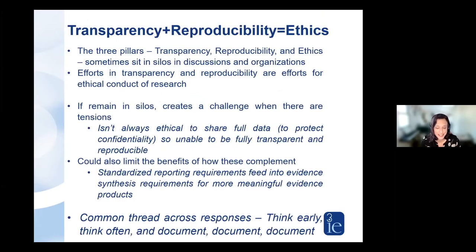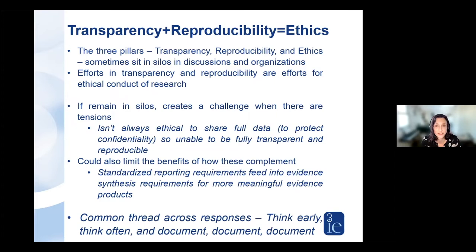Why this intersecting lens? We have three pillars — transparency, reproducibility, and ethics — and sometimes these sit in silos within conversations in the community and within organizations themselves. Transparency and reproducibility are really efforts for more ethical conduct of research. If they remain in silos, it can create a challenge when there are tensions between these pillars. For example, it's sometimes not possible or ethical to be fully transparent and reproducible if we can't de-identify data in a way that ensures we're adhering to our promises of confidentiality.